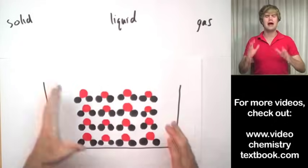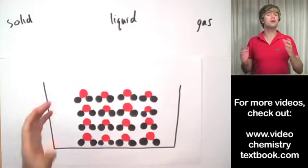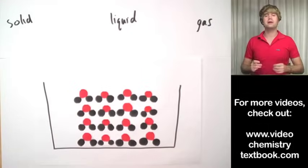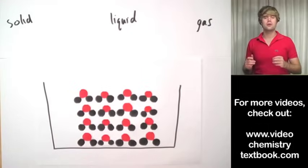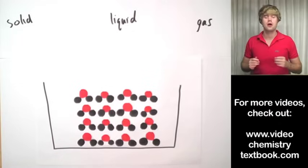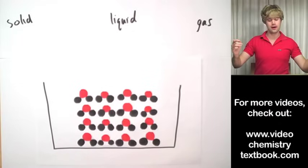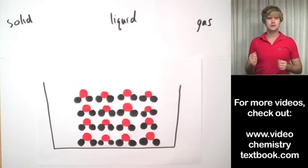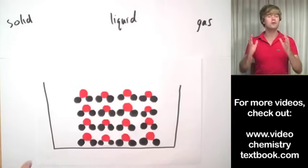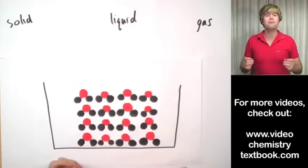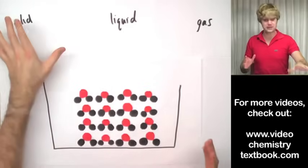I like to make an analogy with these phases to people at a concert. The solid would be like people standing up at a concert before the music starts. They're all standing kind of shoulder to shoulder, pretty tightly packed in there, but they're not really moving much. They might be kind of shifting back and forth, but for the most part they're pretty neatly arranged and they're not moving much. So that's solid.